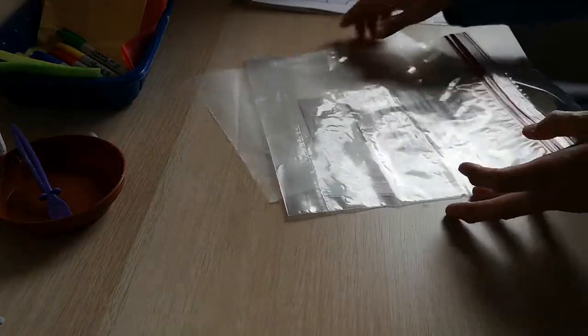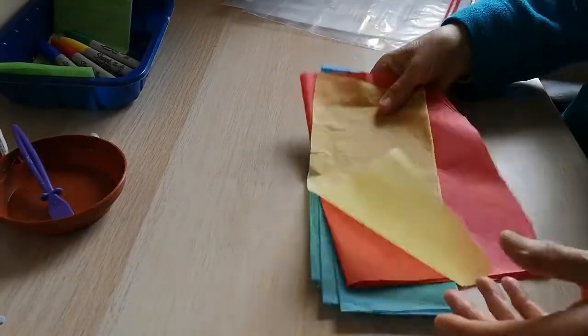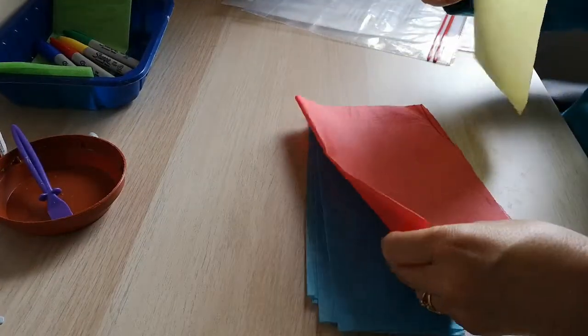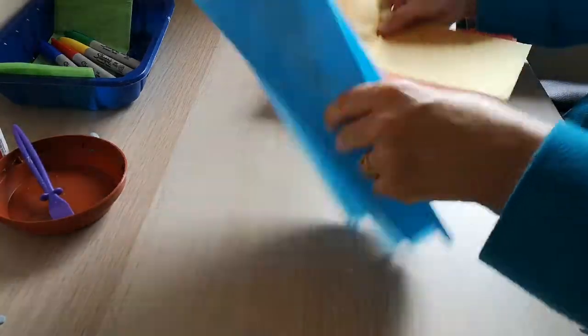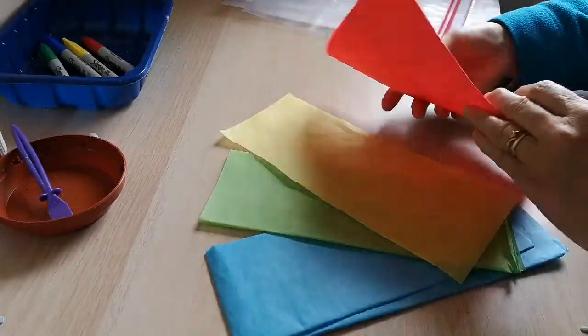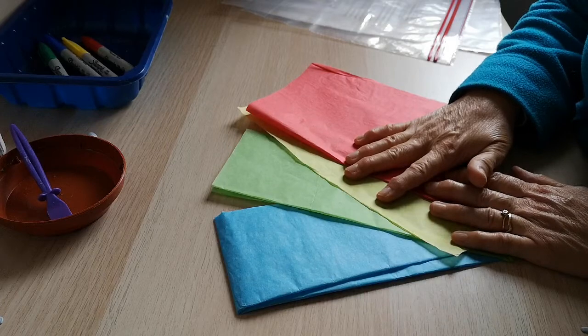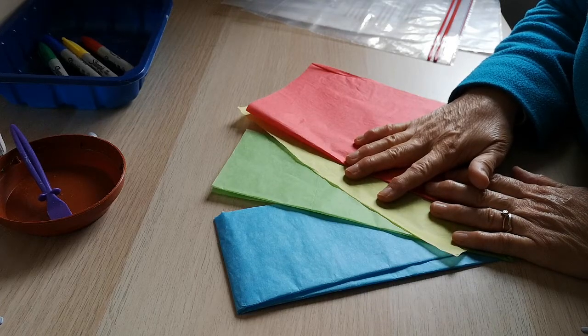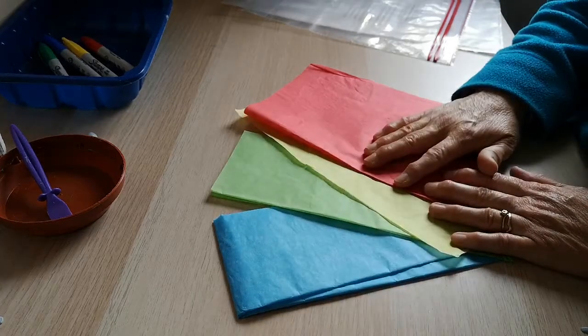You will also need some tissue paper. So for the simple rainbow you're going to need red, yellow, green and blue. For the more complicated seven color rainbow you would need some orange and some dark blue, as well as a light blue and a purple color.